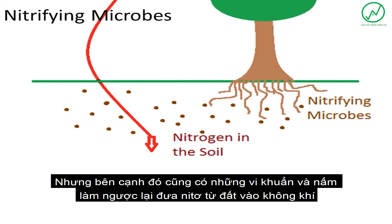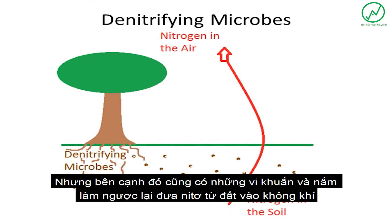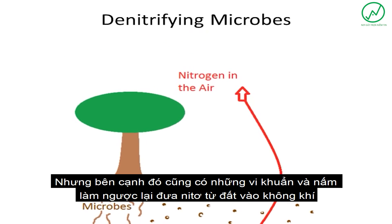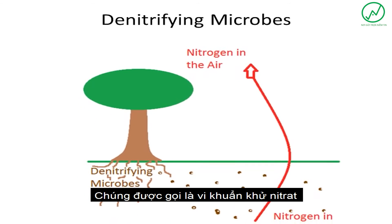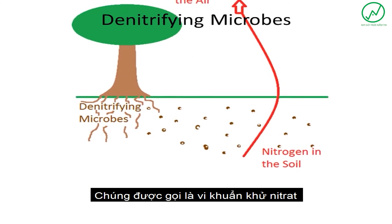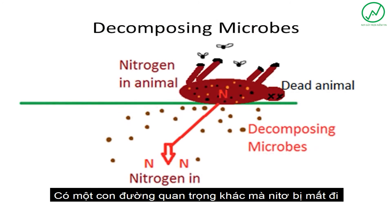There are also microbes that do the opposite — they take nitrogen out of the soil and put it back into the air. These are called denitrifying microbes. There is one other key pathway that nitrogen takes.